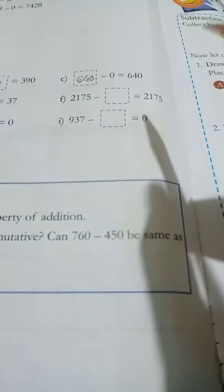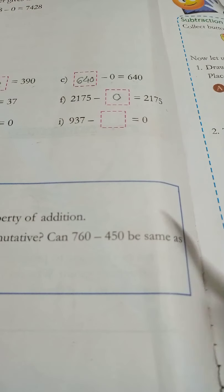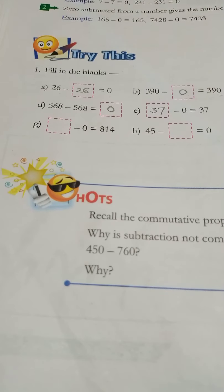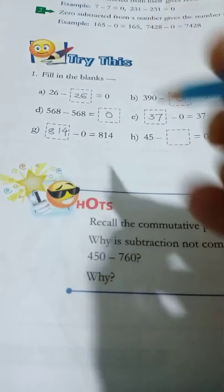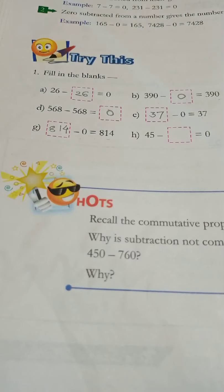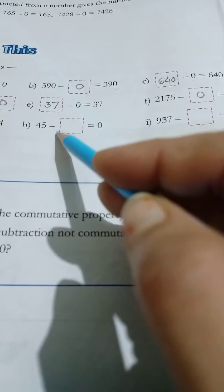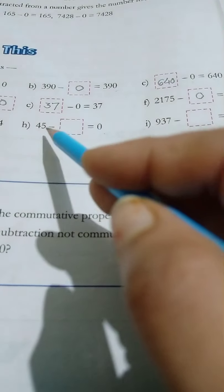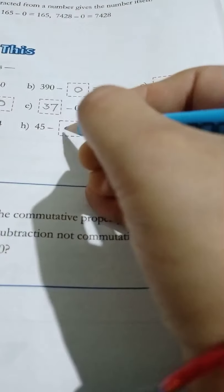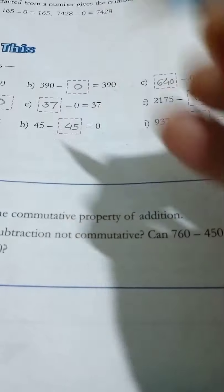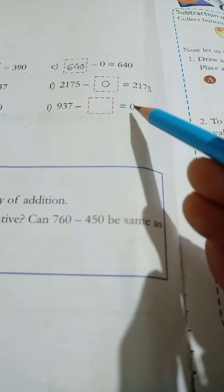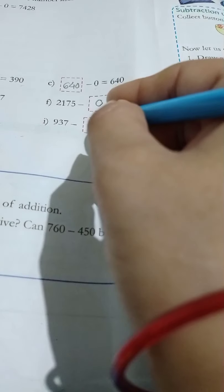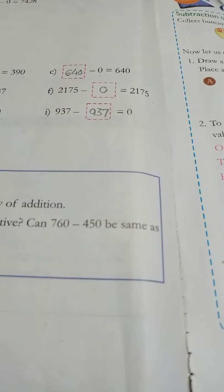E: blank minus 0 is equal to 37, so here 37. F: 2175 minus blank is equal to 2175 — 0 subtracted from a number gives the number itself, so the blank is 0. G: blank minus 0 is equal to 814, so 814 minus 0 is equal to 814. H: 45 minus blank is equal to 0 — a number subtracted from itself gives 0. And 937 minus blank is equal to 0, so the blank is 937.